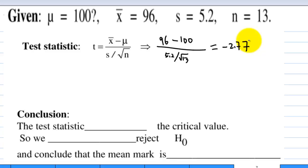Since negative 2.77 is less than negative 2.68, the test statistic is less than the critical value. So we reject the null hypothesis and conclude that the mean mark is less than 100.